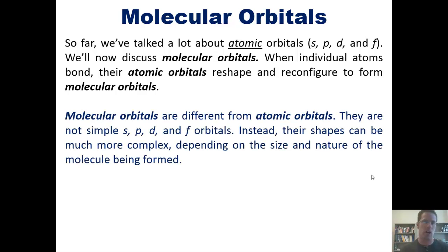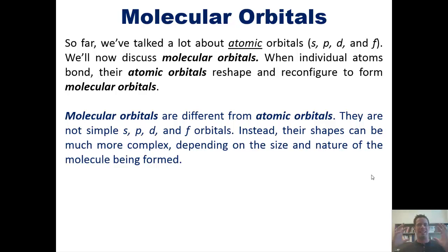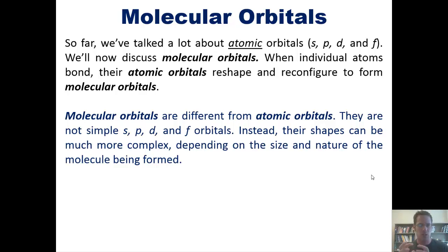Molecular orbitals are different from atomic orbitals. They're not simple S, P, D, and F orbitals — those are atomic orbitals, the orbitals we see around individual atoms. When we talk about molecular orbitals, we're talking about all of the orbitals that surround entire molecules that have multiple atoms in them. Molecular orbitals can have shapes that are much more complex than individual atomic orbitals, depending on their size and the nature of the molecules being formed.